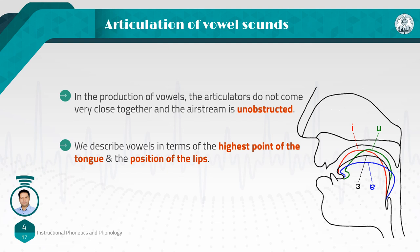The one in blue is 'a,' and look at the shape of the tongue in green color — that is 'u.' Based on these different positions of the tongue in the mouth, we in fact describe and categorize vowels.